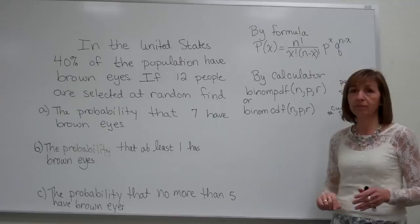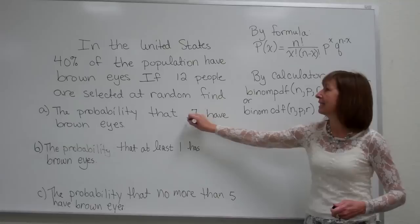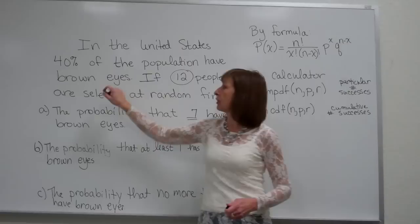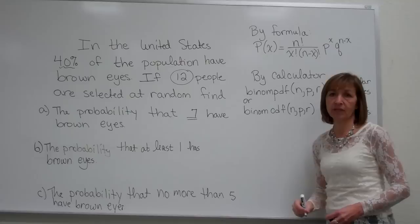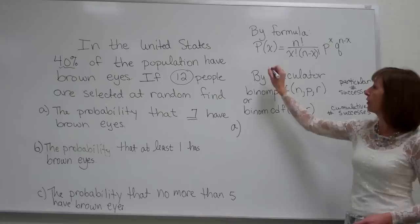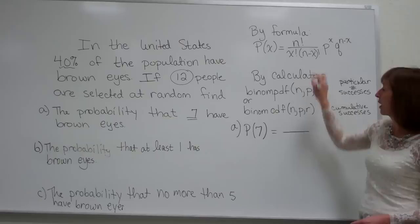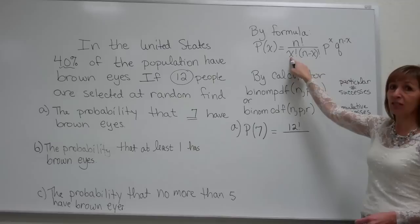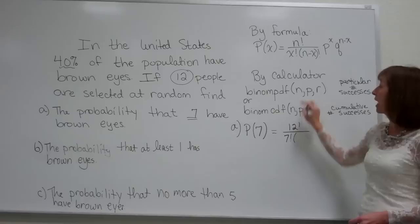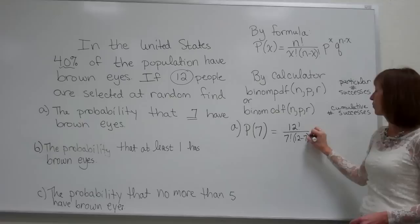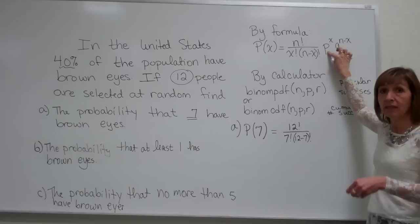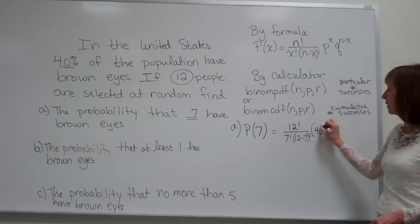For Part A, we want the probability that exactly seven people have brown eyes out of the 12 selected, knowing 40% of the population has brown eyes. From the formula, the probability of seven successes is: n factorial over x factorial times (n minus x) factorial, times P to the x, times Q to the (n minus x). Here, n is 12 trials, so 12 factorial divided by 7 factorial times (12 minus 7) factorial, times 0.40 to the power of 7.